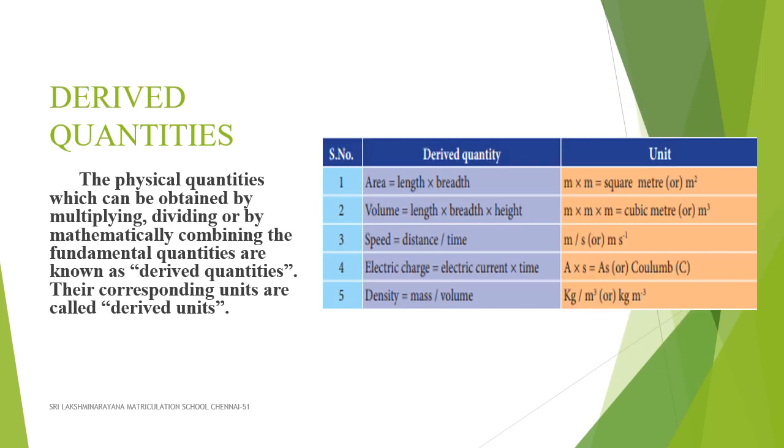Derived quantities: The physical quantities which can be obtained by multiplying, dividing, or by mathematically combining the fundamental quantities are known as derived quantities. Their corresponding units are called derived units.